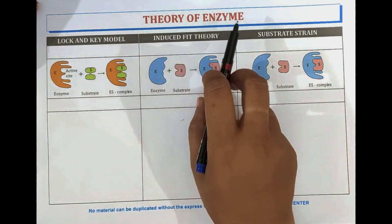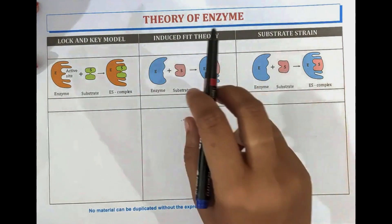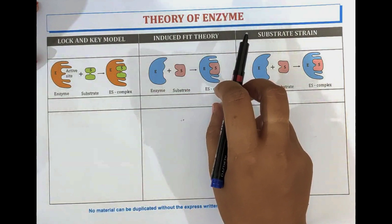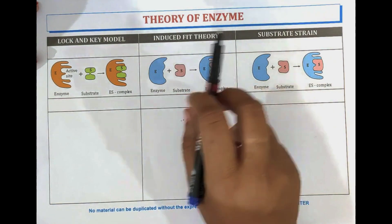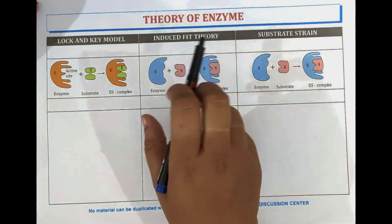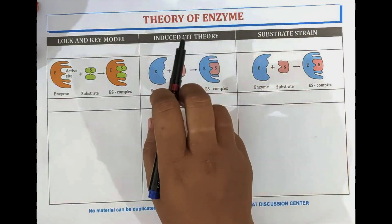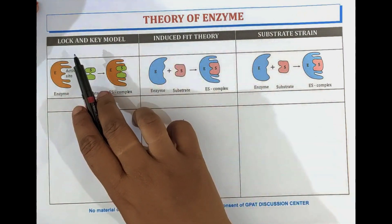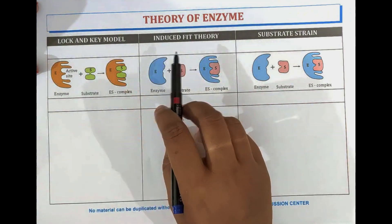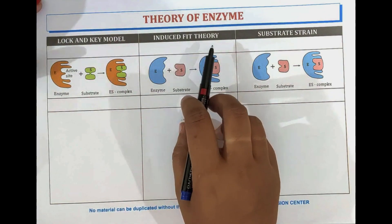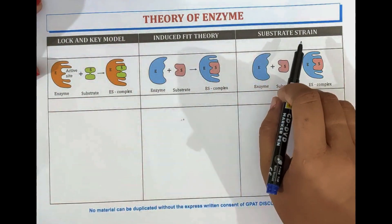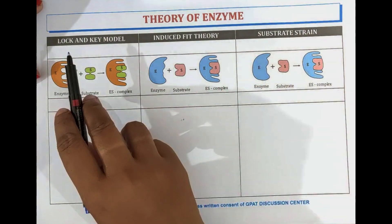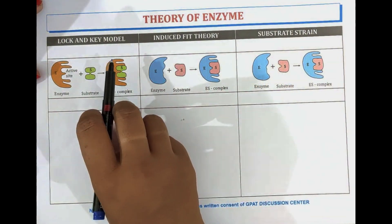These theories are given to predict the structure of the enzyme. There are basically three theories which are given to assume the structure of the enzyme. The first one is the lock and key model. The second one is the induced fit theory. And the next one is the substrate strain theory.